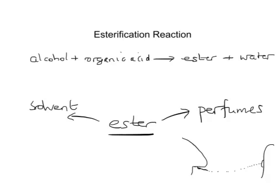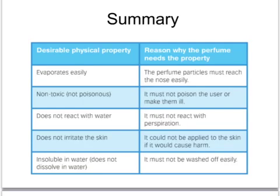Esters therefore have to be volatile liquids — they have to evaporate easily at room temperature. But there are also other properties that perfumes must have, summarised here. The perfume must evaporate easily so it can travel to our nose; it must be non-toxic, meaning it mustn't poison the user or make them ill. It mustn't react with water because we all sweat naturally, so it mustn't react with perspiration. It mustn't irritate the skin or cause any allergic reactions. And it must be insoluble in water so that it doesn't dissolve or wipe off easily.